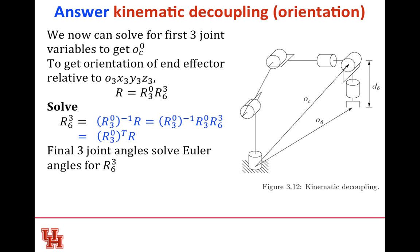All right, yes, it is that easy to invert a matrix. We want to isolate R6 of 3, which is the orientation from the spherical wrist to the correct orientation at the end. I'll multiply both sides by R3 in the zeroth frame, take the inverse of that, and isolate R6 of 3. To get the inverse, all we do is take the transpose. The transpose of R3,0 times R gives you your rotation. Now we figure out what to set these last three joint variables to get R6 in frame 3.